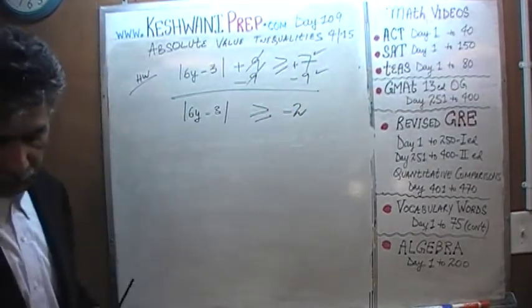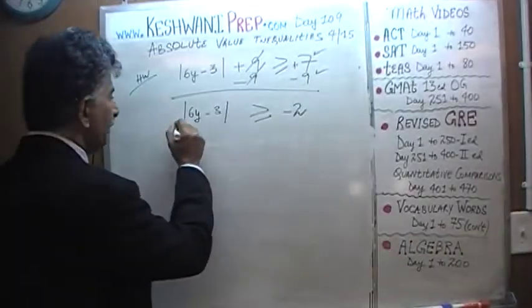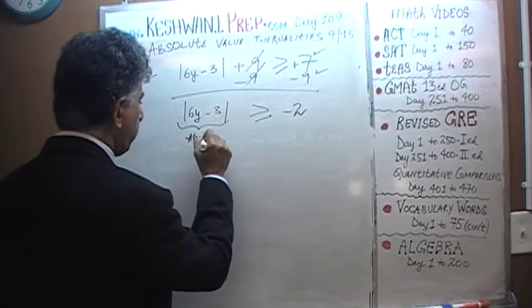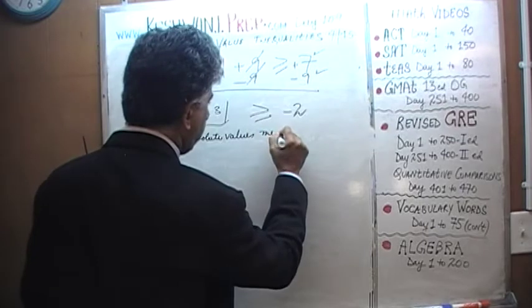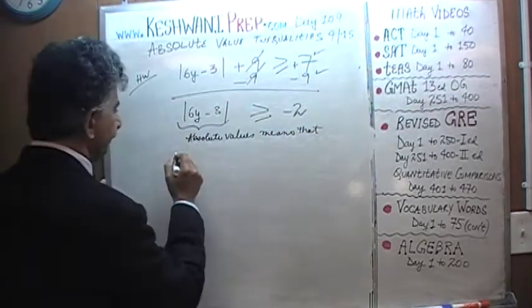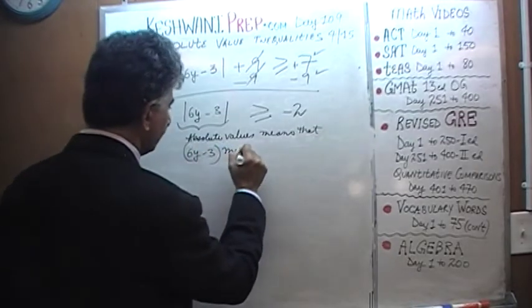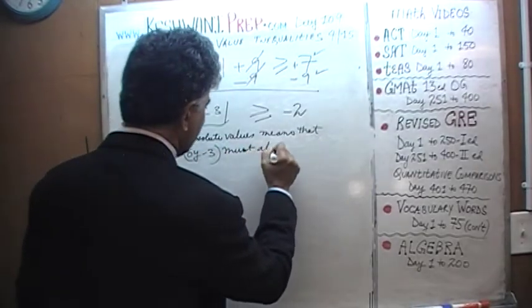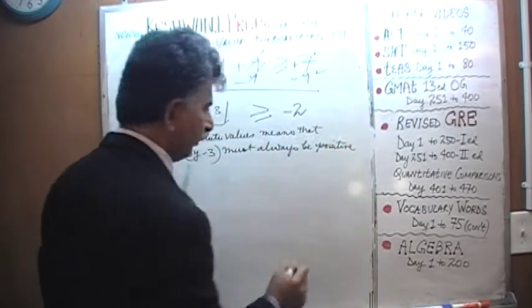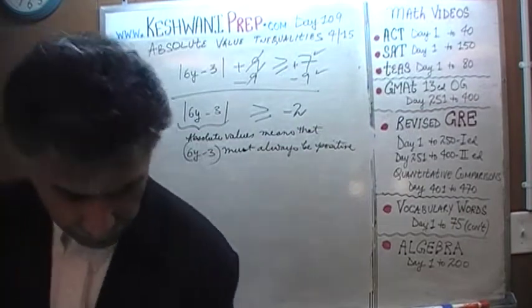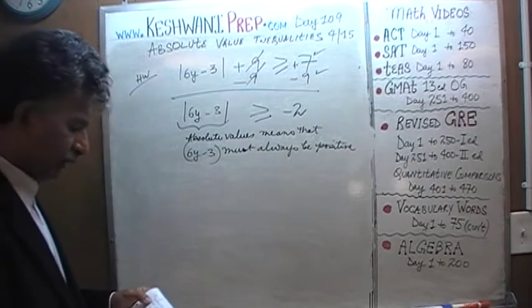Now what do you gather from that? What does it tell us? We know that the absolute value has to always be positive. Absolute value means that the quantity 6Y minus 3 must always be positive — regardless of what value Y takes, this quantity is going to be always positive.